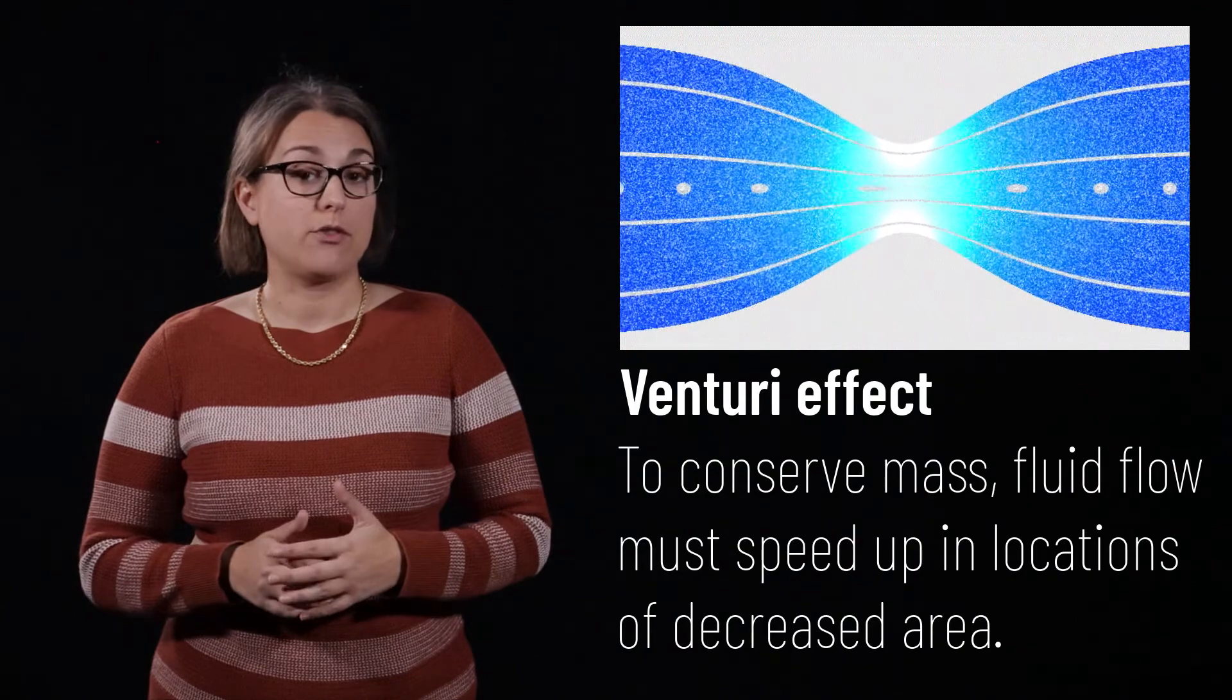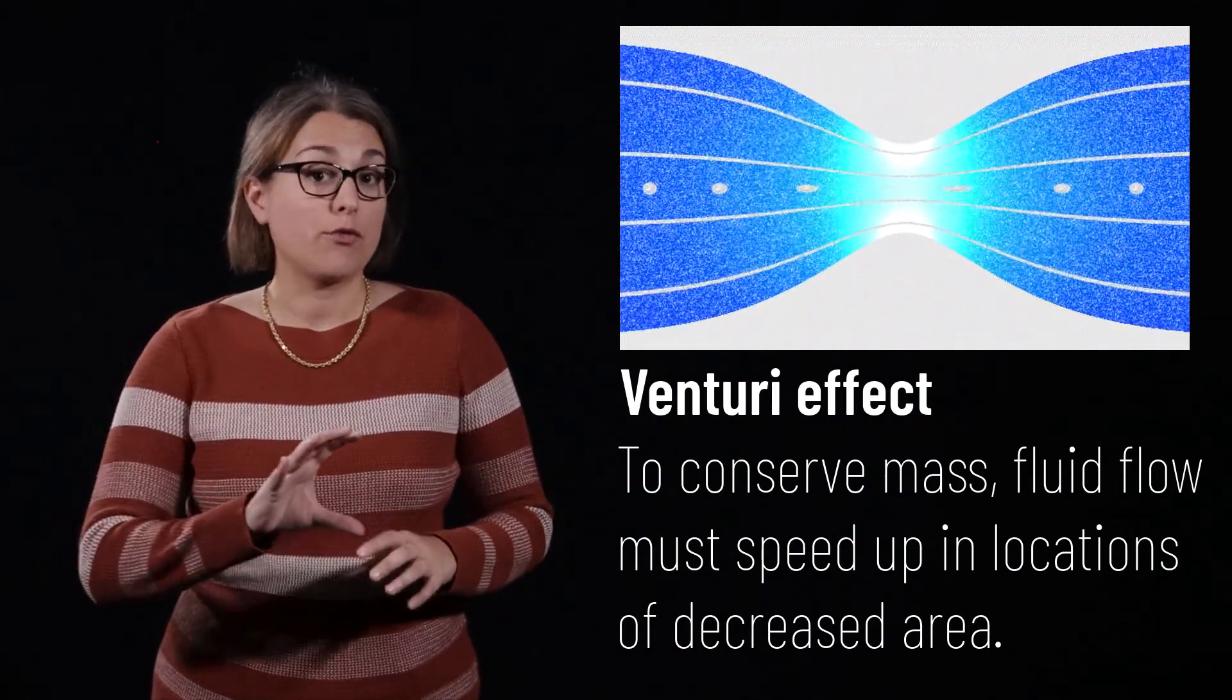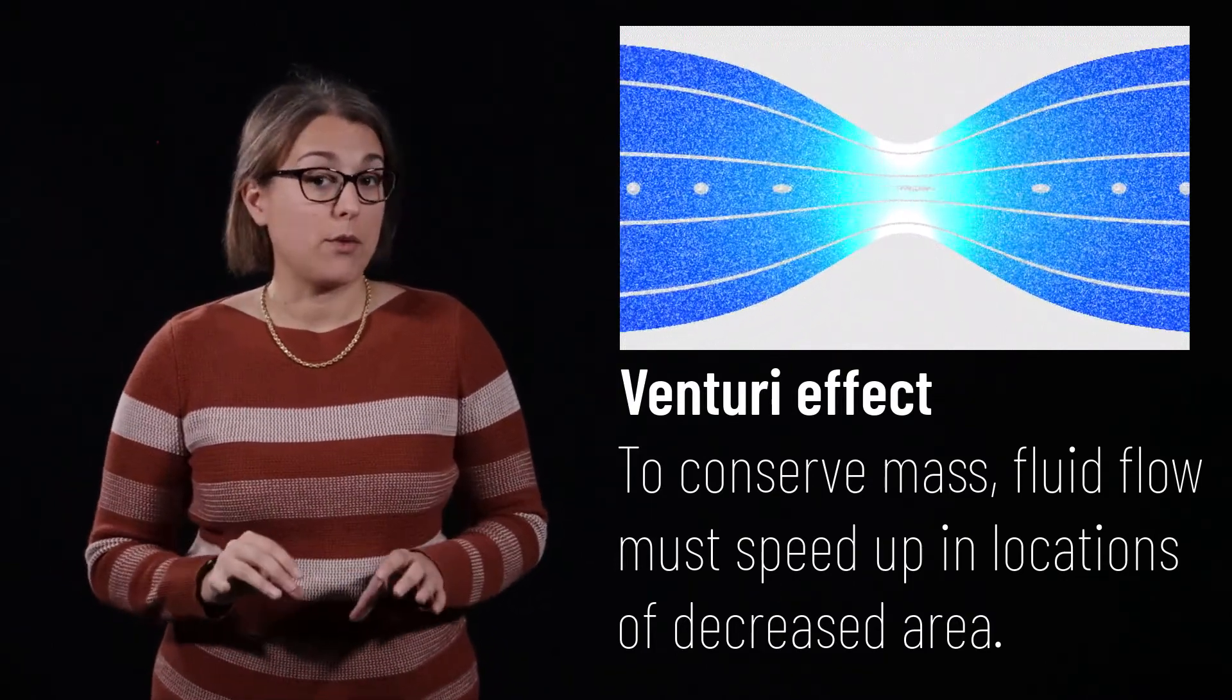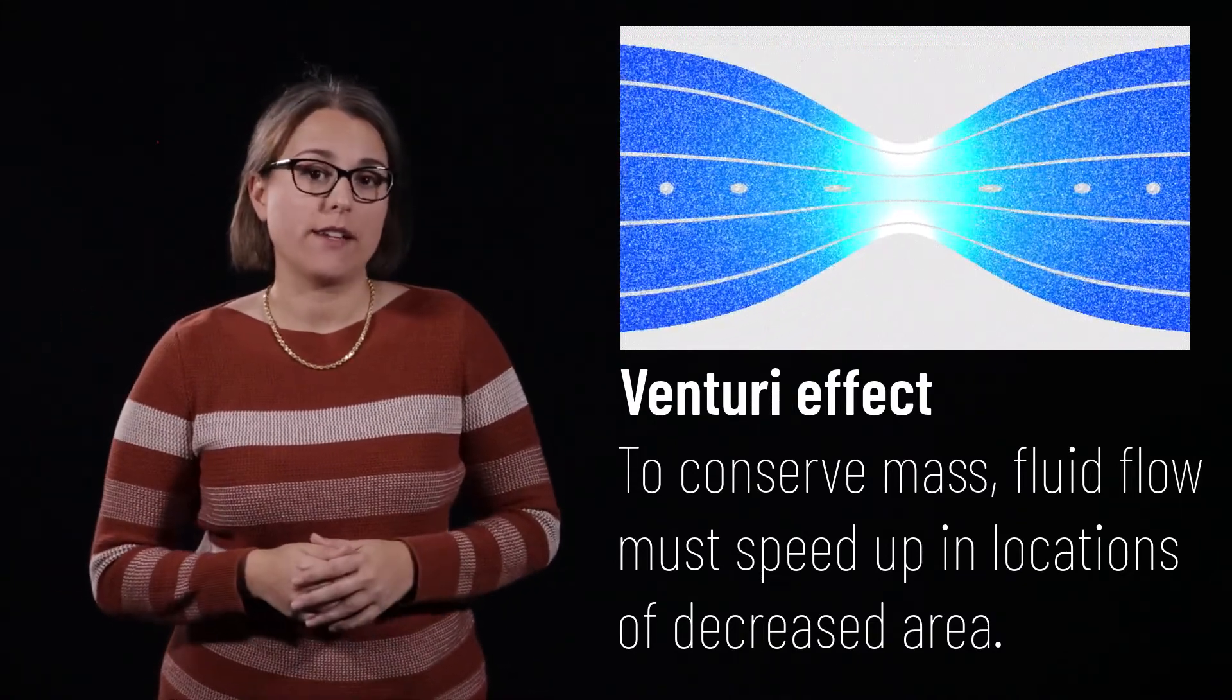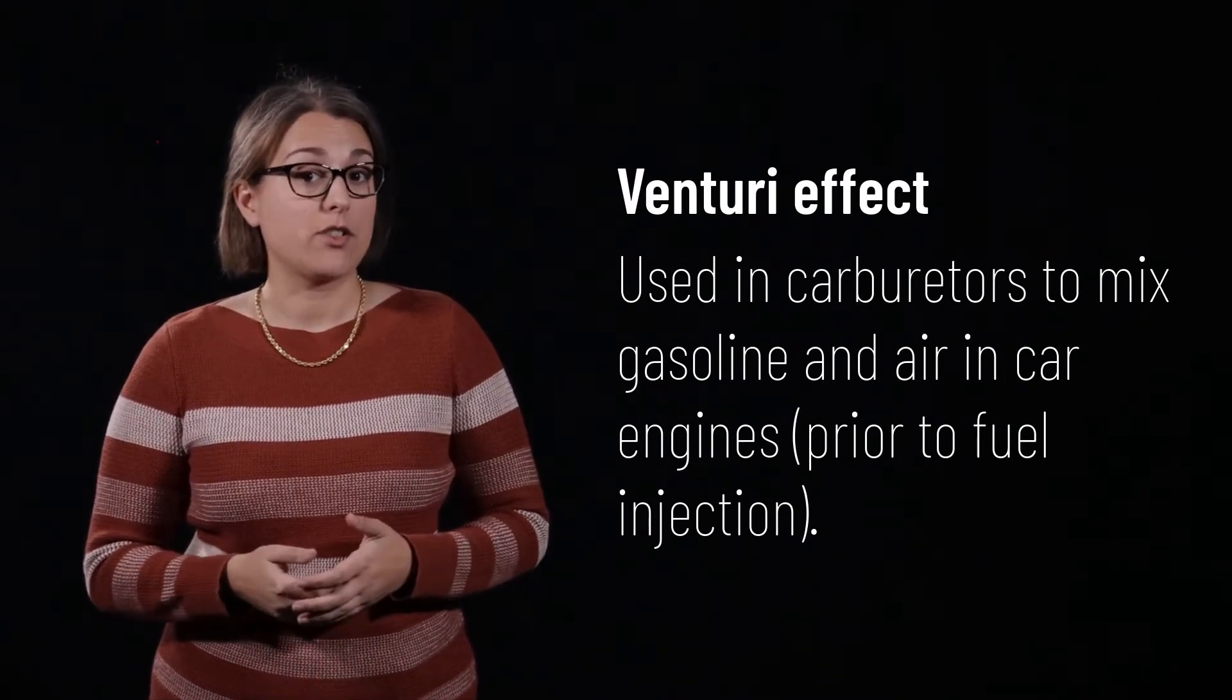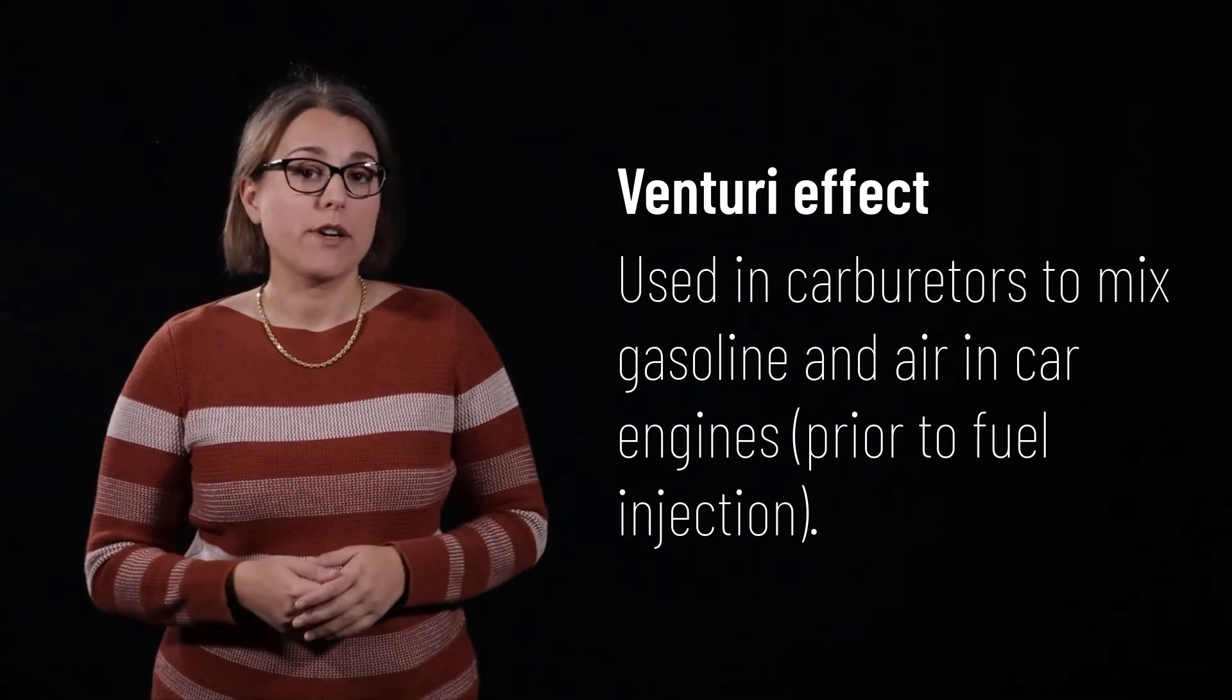The Venturi effect comes about due to conservation of mass. If I have some fluid flow through some pipes, if I decrease the area of the pipe, then in order to get the same amount of mass flowing through, the fluid has to speed up in the smaller area. If you've ever heard of a carburetor, which is how gasoline and air were mixed together in car engines prior to fuel injection systems, this is how a carburetor works.